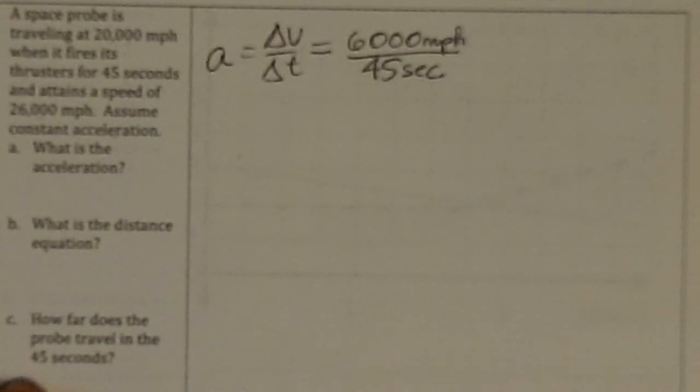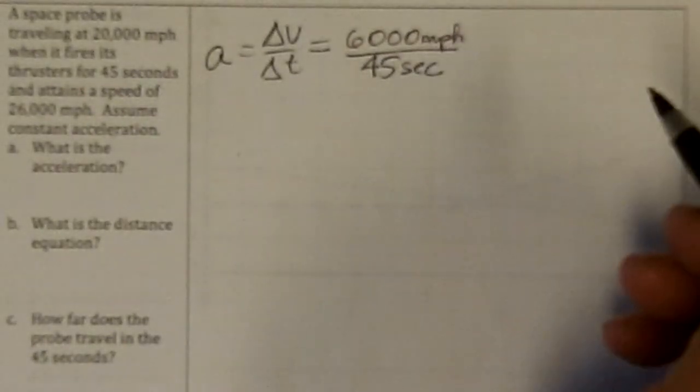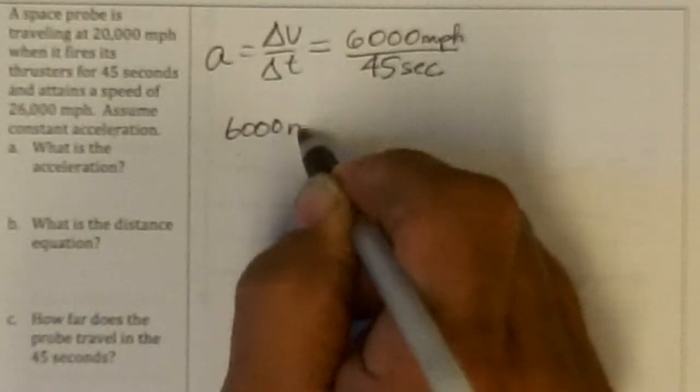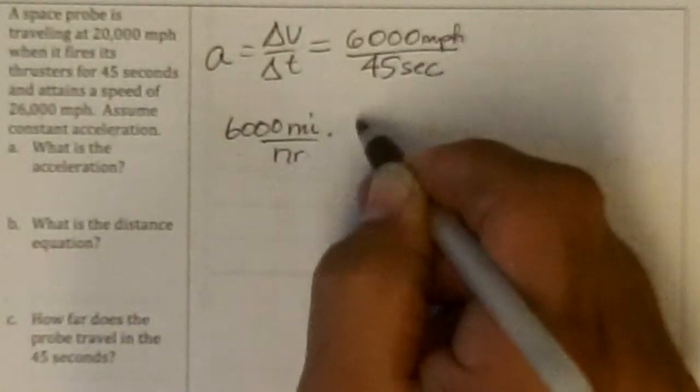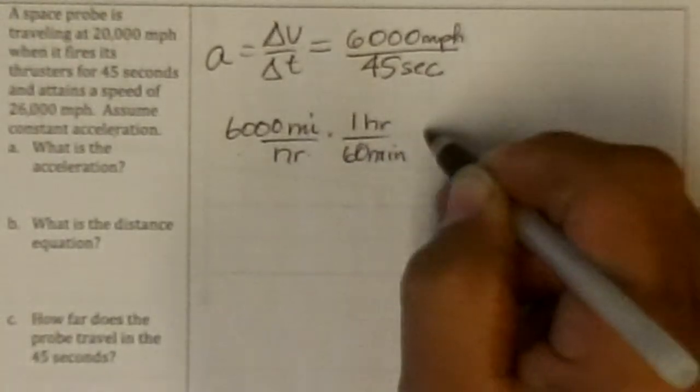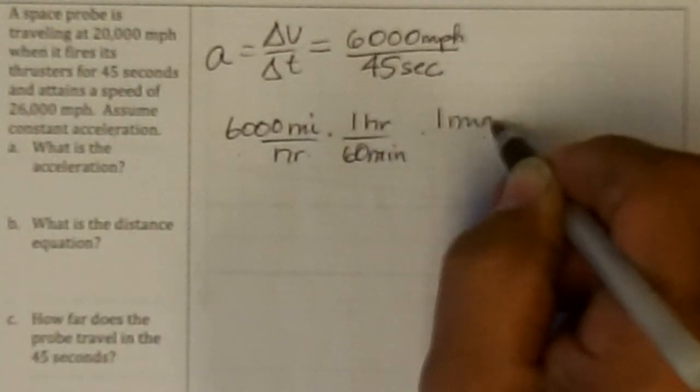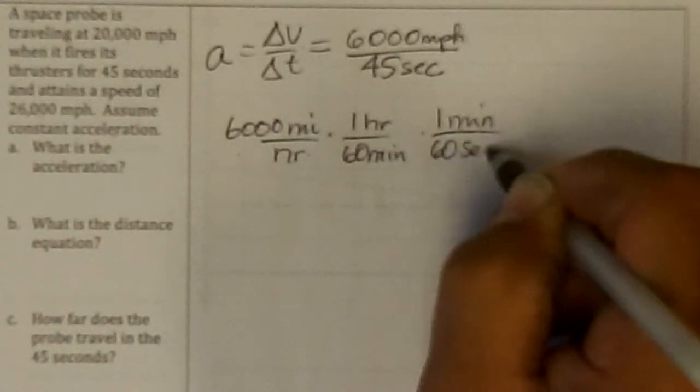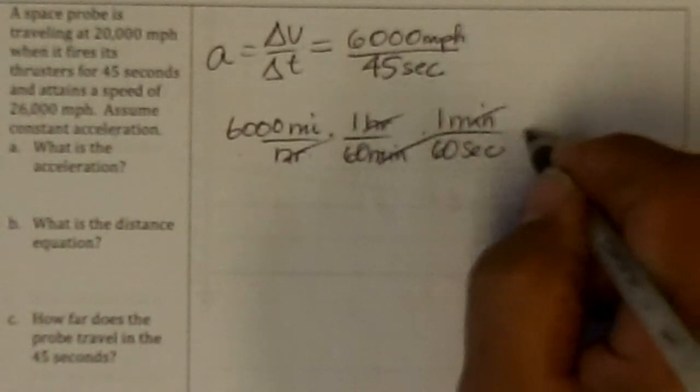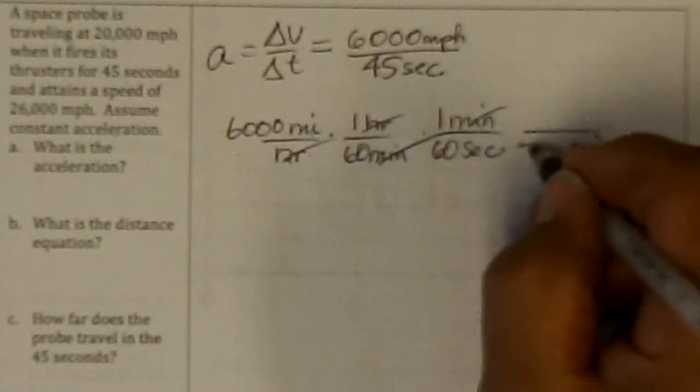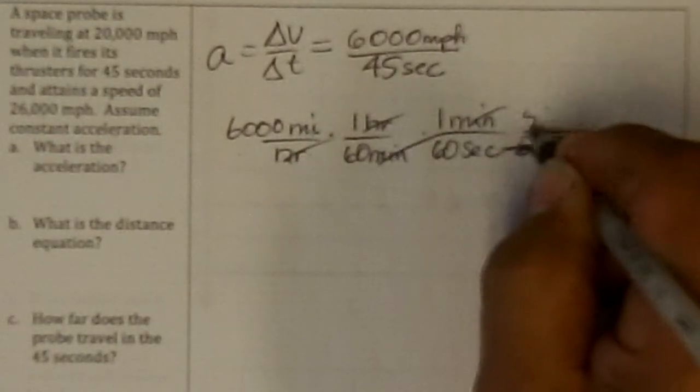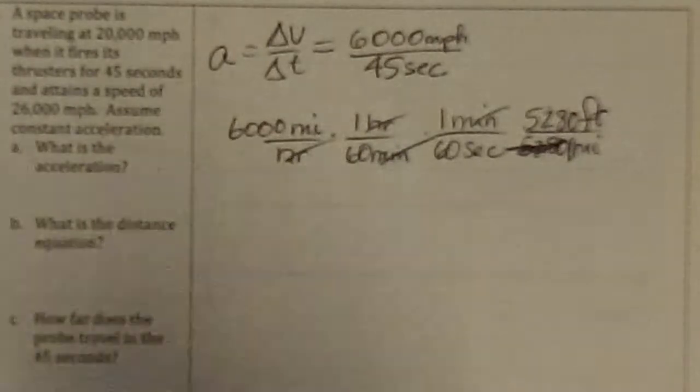Since this problem part C asked it in seconds, we need to change the miles per hours to feet per second. So 6,000 miles per hour and we want the hours to cancel out. So we put one hour is 60 minutes and then one minute is 60 seconds. So the minutes are gone, the hours are gone, and I'm going to have it in seconds, but now I get the miles to feet and so I want the miles to cancel out. So I get 5,280 miles is, oh excuse me, one mile is 5,280 feet. I really had that backwards there for a sec.